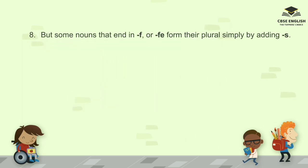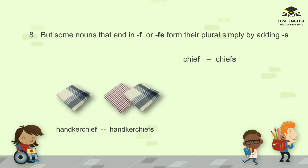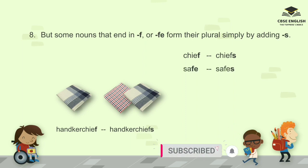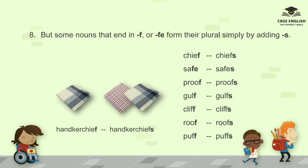But some nouns that end in F or FE form their plural simply by adding S. For example: handkerchief, handkerchiefs; chief, chiefs; safe, safes; proof, proofs; gulf, gulfs; cliff, cliffs; roof, roofs; puff, puffs.